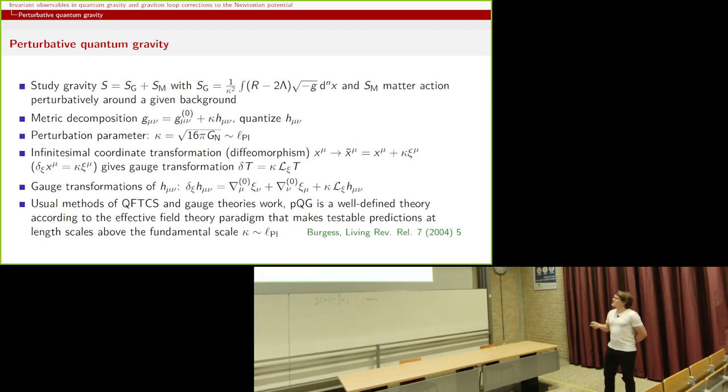You all know what we do. We take our metric, put a background, some perturbations, quantize perturbations. The perturbation parameter is kappa, square root of Newton's constant, with c equal h-bar equal one, so it's very small, Planck length essentially. So it's a very good perturbation theory.